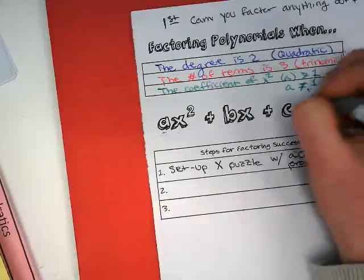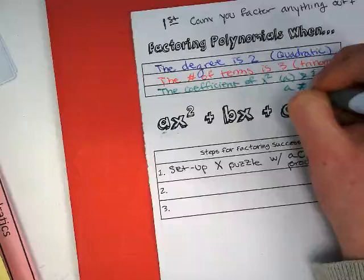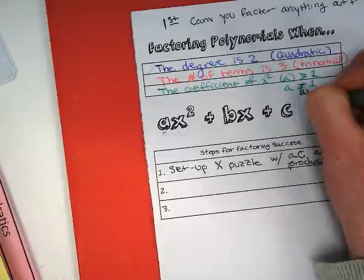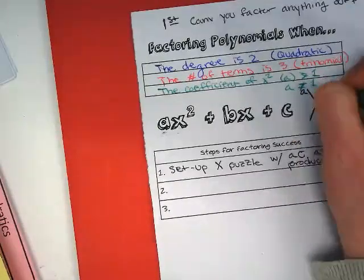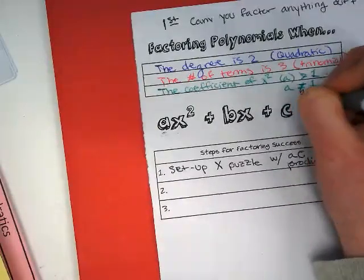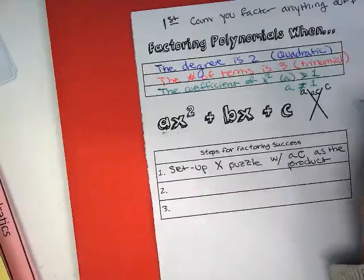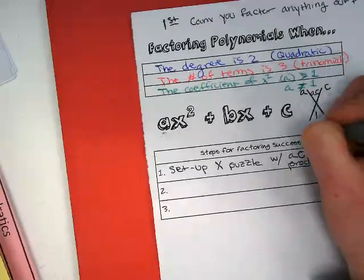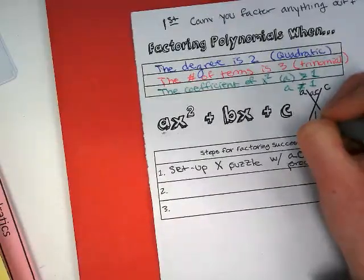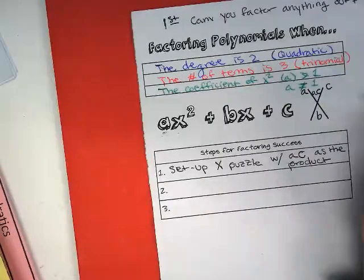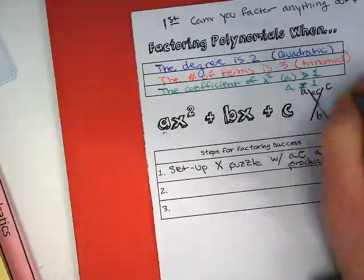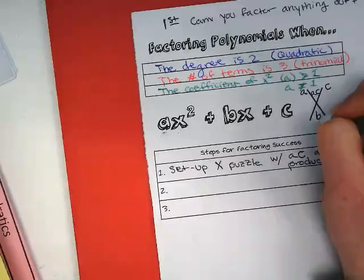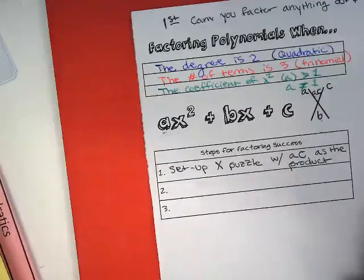To keep track of this, I'm going to write a to one side of my x and c on the other so that I remember I'm multiplying them to get ac. And we still have b in the sum place. So now I am looking for two numbers that will multiply together to get a times c and add together to get the sum equal to b.